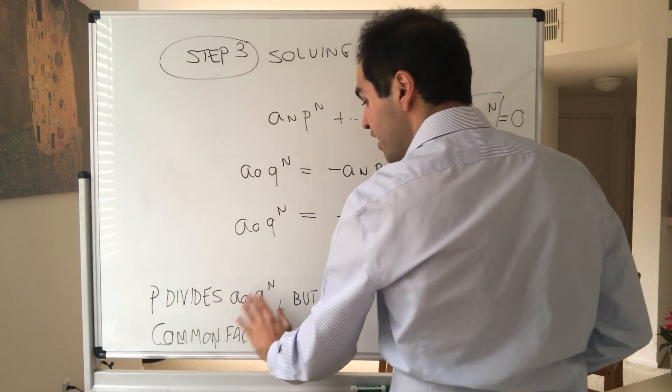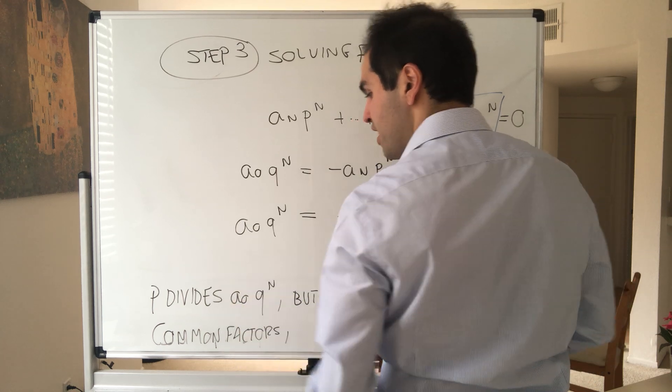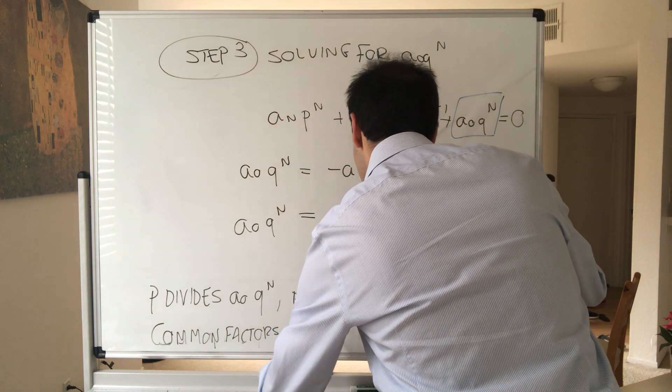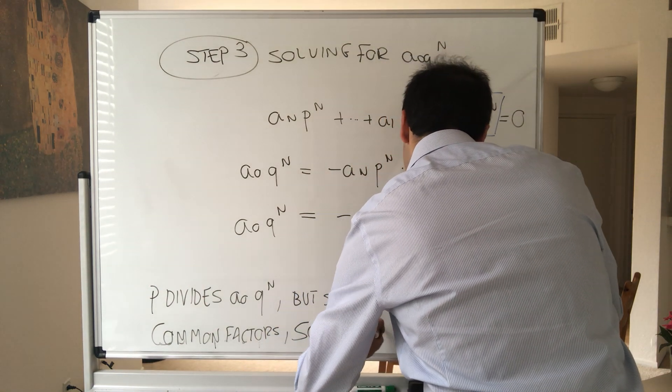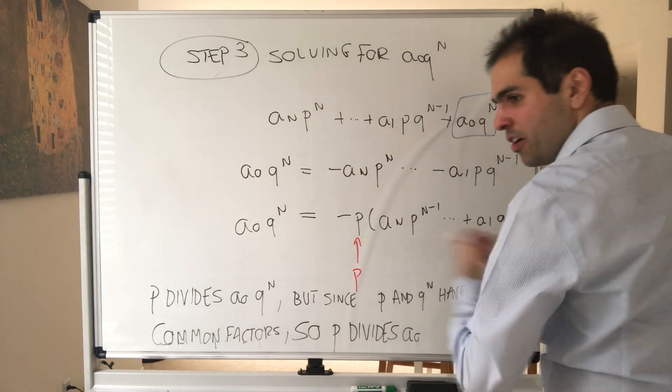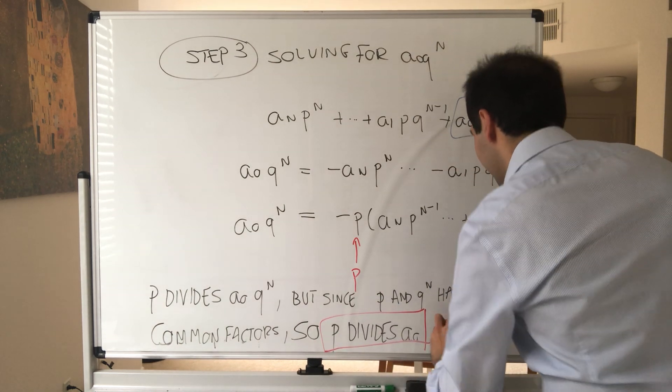P must divide—again, p divides the product, but p and q^n are independent of each other, therefore p has to divide this coefficient a_0. And we can just put our box of victory because we are done.